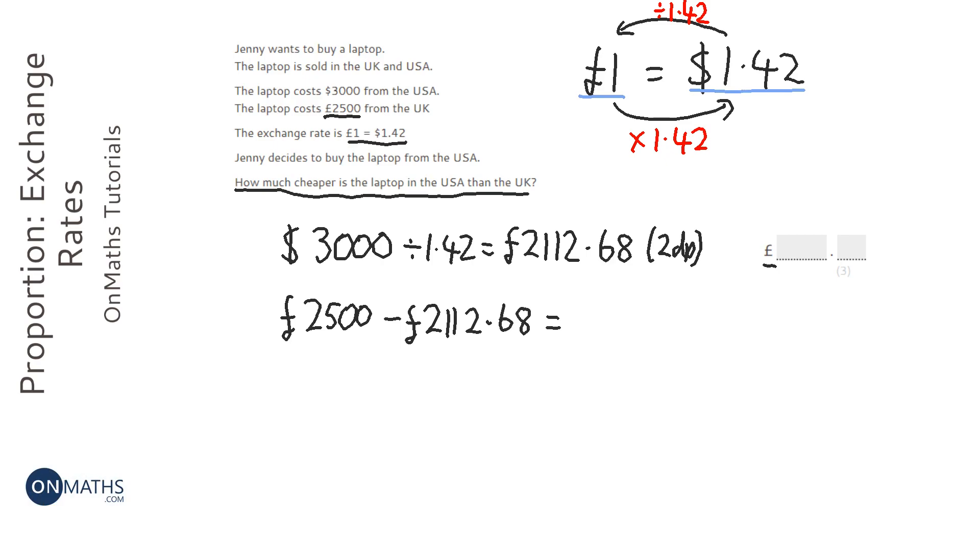And on my calculator, I'm just going to type in £2,500 takeaway answer and then press equals. And it gives me the answer of 387.32. So it's £387.32 cheaper.